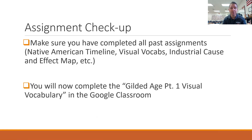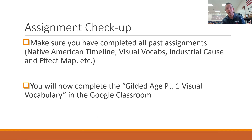Our closure activity today is another visual vocab for this chapter. There are ten words. You do the same thing as last chapter: find the definition, put it in your own words, find an image online that you think represents it, copy and paste it, and put that in for each term in the slideshow. If you have any questions, as always please let me know. Good luck, hope you enjoyed the lesson, we'll see you next time.